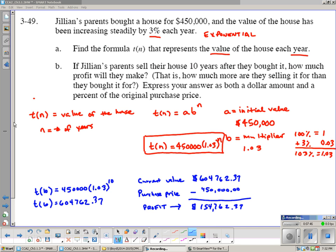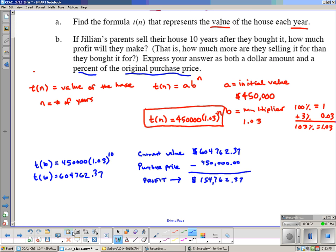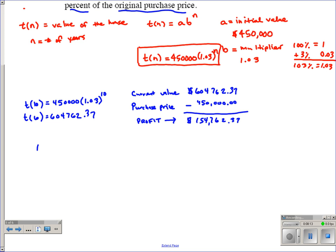The next part is asking us to also express our answer not only as the dollar amount but also as the percent of the original purchase price. To figure out our percent of the original purchase price, if we take $154,762.37 and divide it by the original price, we can determine what percent of that our profit ends up being.